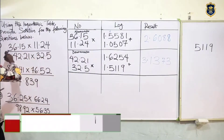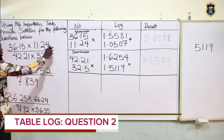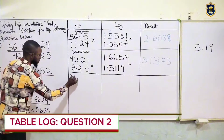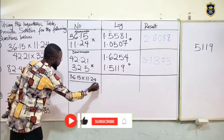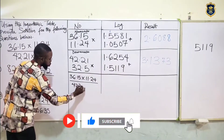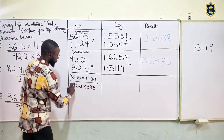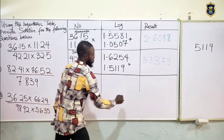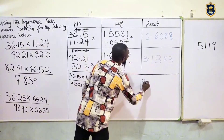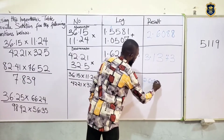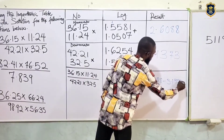Let me rule this off. The numerator is this, and they are dividing. If you divide them, the answer from the numerator will subtract the answer from the denominator. So therefore it is 36.15 times 11.24 over 42.21 times 32.5 — we are subtracting this answer from this one.